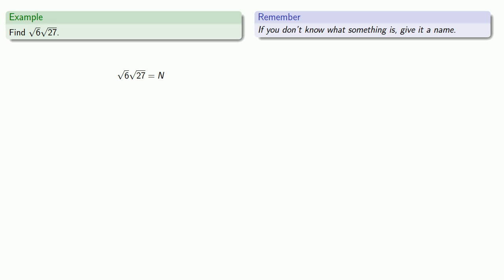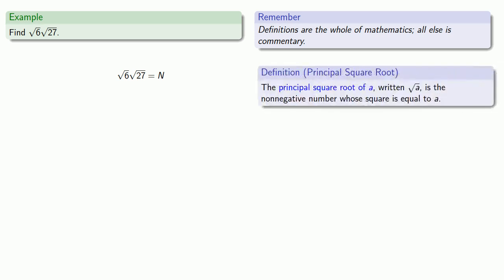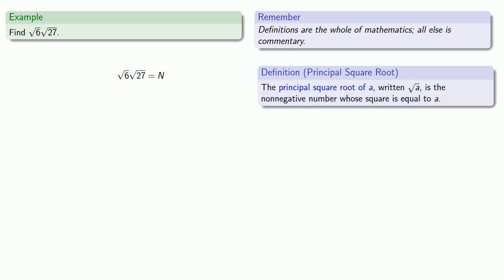Now seeing as how we have a bunch of principal square roots, we might ask ourselves, what is the square root? Remember, definitions are the whole of mathematics — all else is commentary. So let's pull in our definition of principal square root. We know that the principal square root of 6 is the non-negative number whose square is equal to 6, and the principal square root of 27 is the non-negative number whose square is equal to 27.